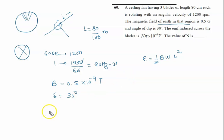Now what is B? It will cut the vertical component of the magnetic field when the blade will rotate. Horizontal will not cut and vertical is given by B sin delta.